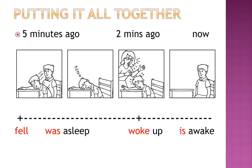Putting it all together: we have an action five minutes ago, then another action two minutes ago, and we have a present status now. For example: 'fell asleep' — action; 'was asleep' — status; 'woke up' — action; 'is awake' — status.